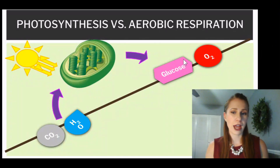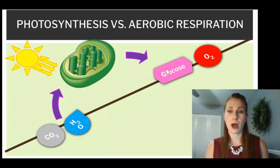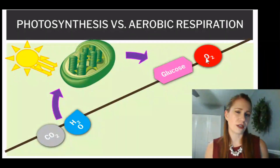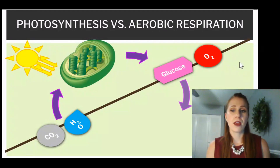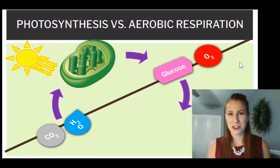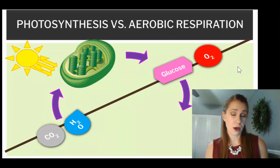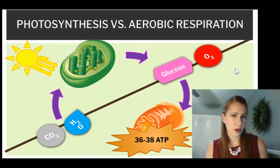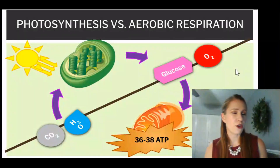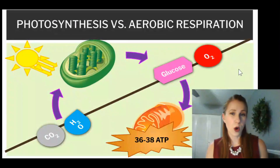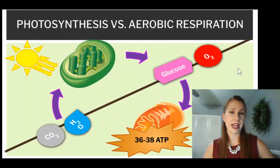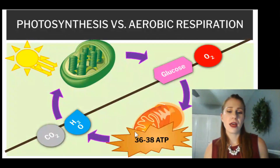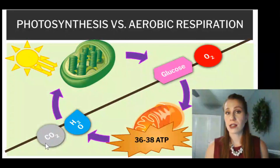Remember, for a plant, they store that glucose — and that's why some plants taste sweet, because they have glucose stored up. They release that oxygen, the majority of it, into the air for us. We take in that oxygen when we breathe and we eat food to make glucose, and it goes through our mitochondria. During this process, we're creating 36 to 38 ATP — it's aerobic respiration, so we're being as efficient as we can.